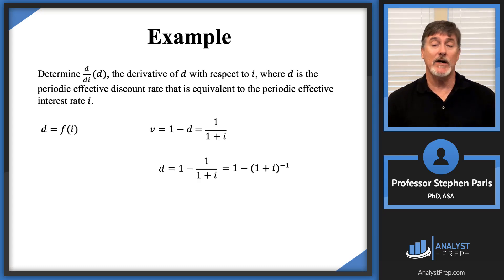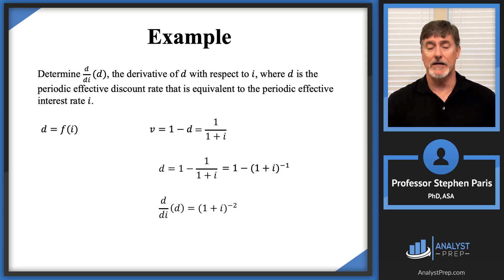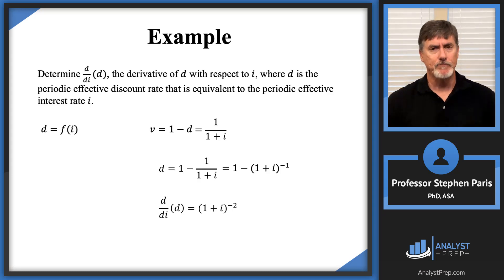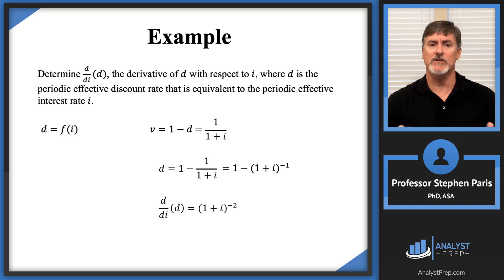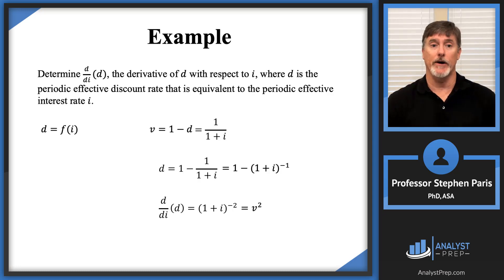Taking the derivative of D with respect to I, the derivative of one is zero. Then taking the derivative of the second term, the minus one comes down, and I get plus one plus I to the minus two by the power rule. Writing that with positive exponents gives one over one plus I squared, which equals V squared. So the derivative of D with respect to I is V squared.